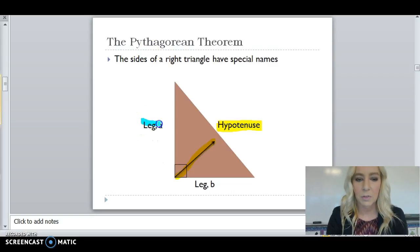Now, the two sides that make up the right angle are called leg A and leg B. Again, these are the sides that form the right angle.